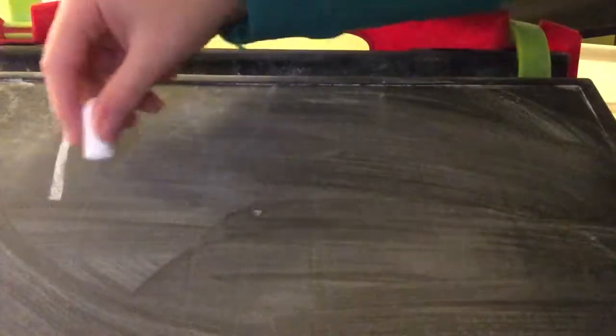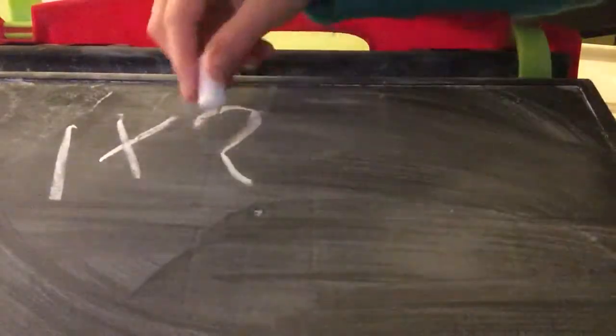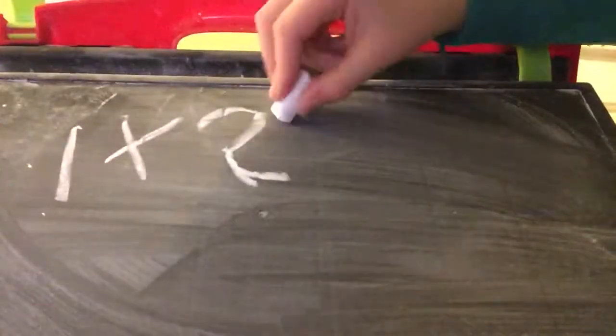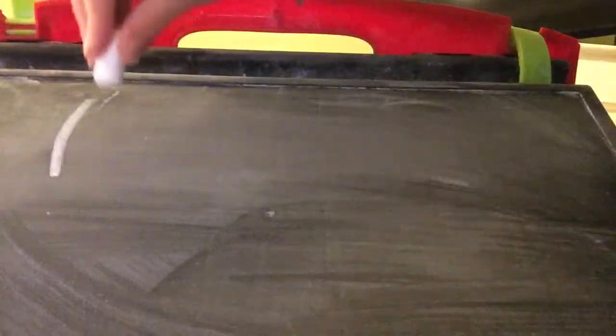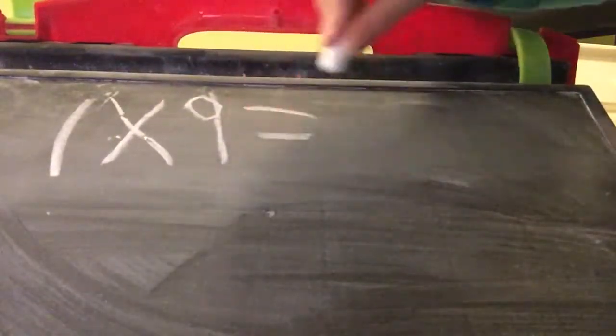Now let's do one times two. Let's count by ones. So one, one — we're going to count by ones twice: one, two, which equals two. So anything times one equals the other number. Like, one times nine equals nine.